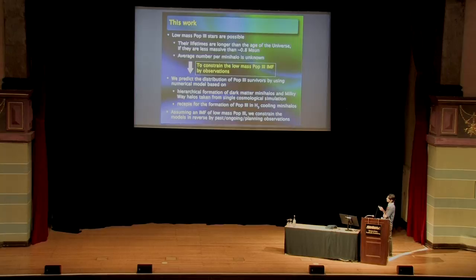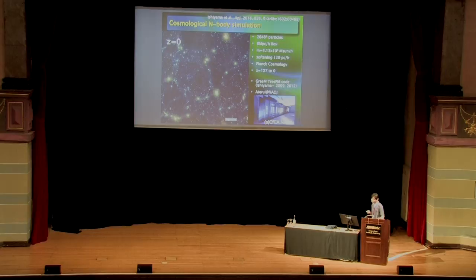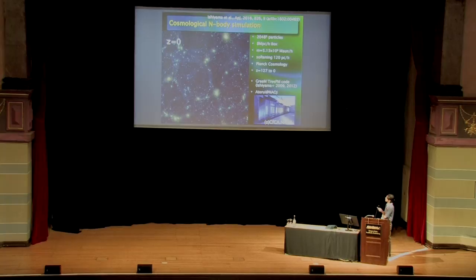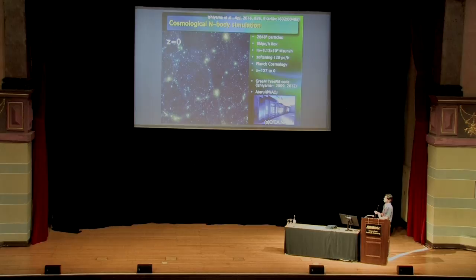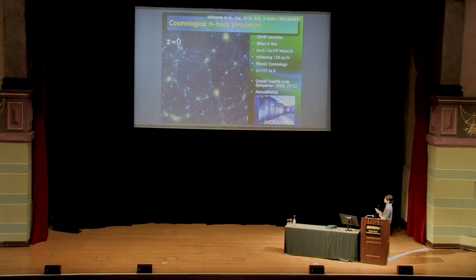We assume an IMF of low-mass Pop 3 stars, and constrain the model using past, ongoing, and planned observations. In our work, we first performed a large cosmological N-body simulation. The mass resolution is about 5×10³ solar masses, and the box size is 8 megaparsecs per side. In this simulation, we can resolve Pop 3-forming mini-halos with mass around 10⁵ solar masses, and also simulate Milky Way-sized halos at redshift zero. From this single cosmological simulation, we can resolve both Pop 3-forming mini-halos and Milky Way-sized halos at redshift zero, and obtain the assembly history of Pop 3-forming mini-halos and their evolution to z=0.